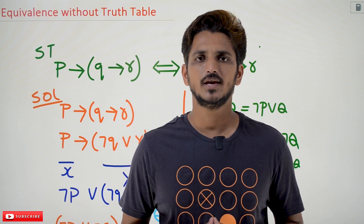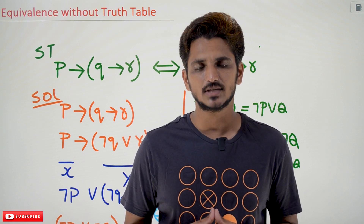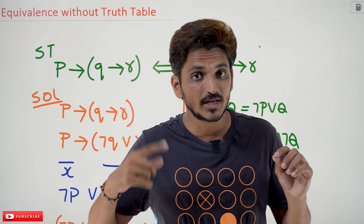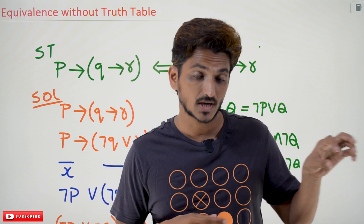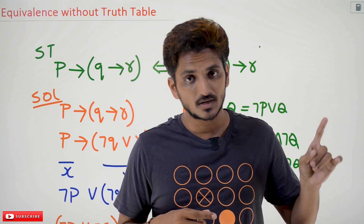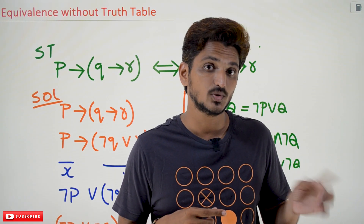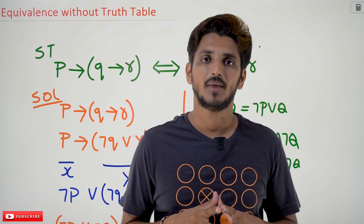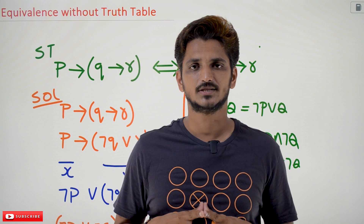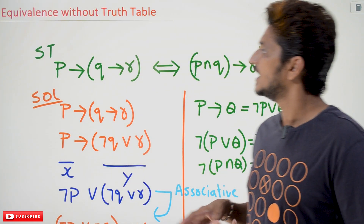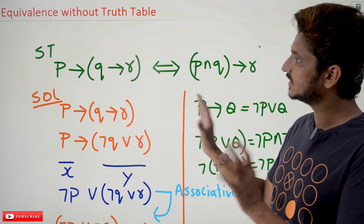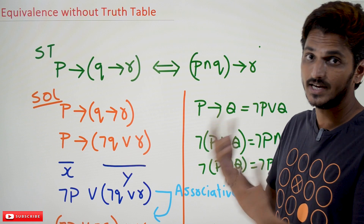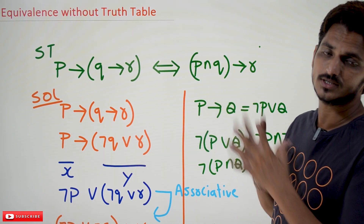Hi! Welcome to Learning Monkey. I am Raghur. In this class we will discuss the equivalence of two propositions without constructing a truth table. In our last classes we discussed this using construction of truth tables and we already discussed equivalence formulas. Please watch those classes and come back here. The link for the playlist is provided in the description below. Coming to today's class, as this is our first example on equivalence without constructing truth tables, we will go very slow and give different ideas on how to think about and solve these equations.